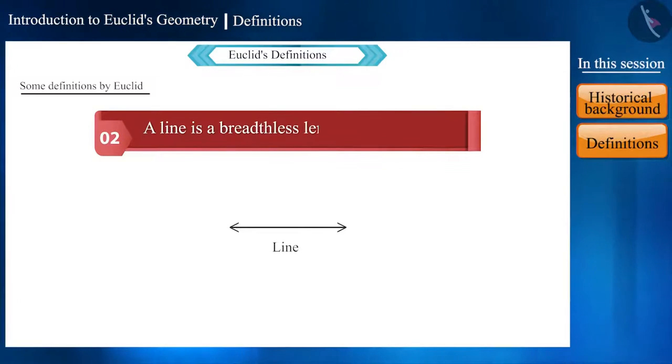Second definition is, a line is a breadthless length. That is, a line has no breadth. But here, length and breadth are also not defined.